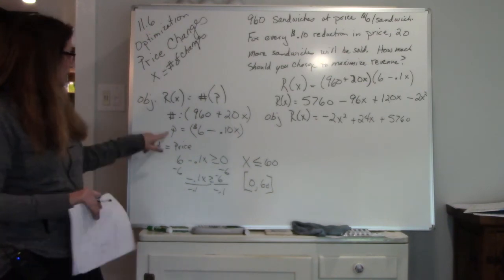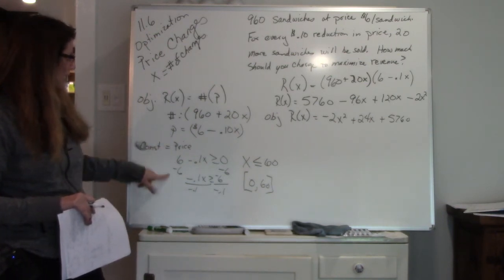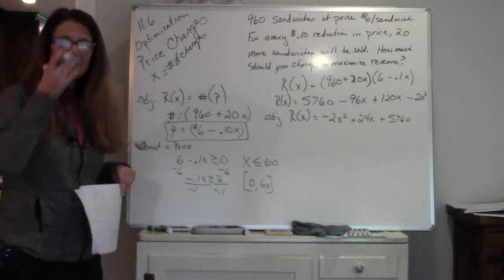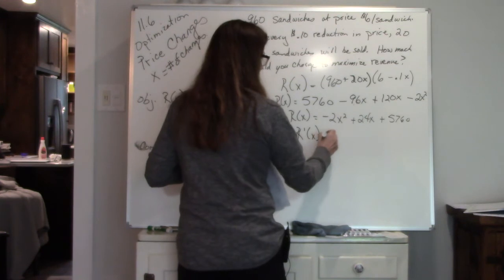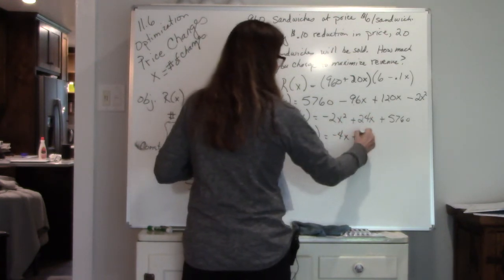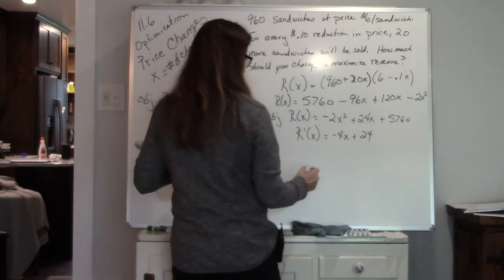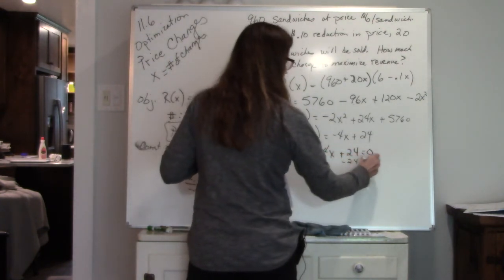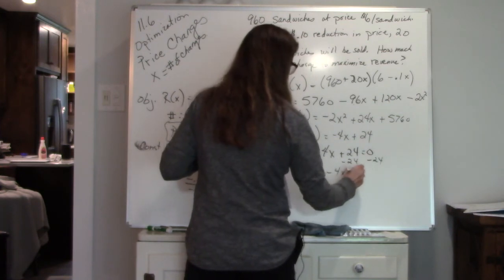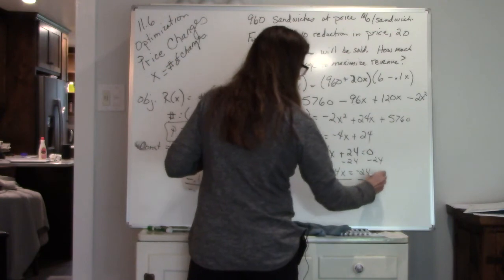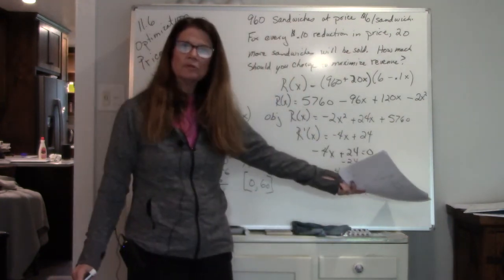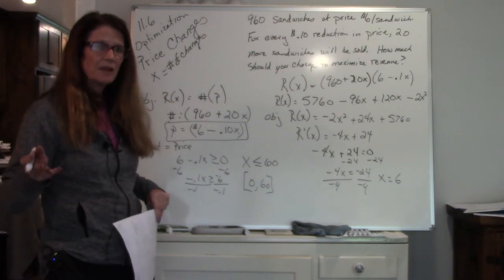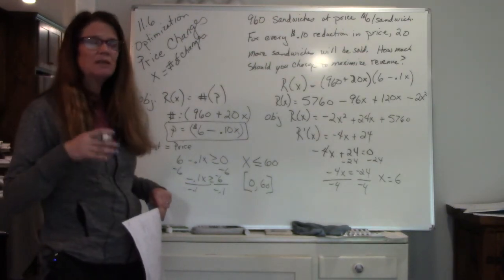Price is already solved for itself for the single variable. I've gotten my domain. And now I can go back to, and I'm going to circle this one. And now I'm going to find the derivative of my objective. So derivative of revenue. Bring this to the front and multiply. Bring this to the front and multiply. I set my derivative to 0, because that's where my maximum could happen. Divide both sides by negative 4, and I get x equals 6. Again, that's the number of price changes. I can change the price six times.